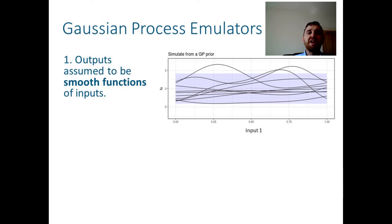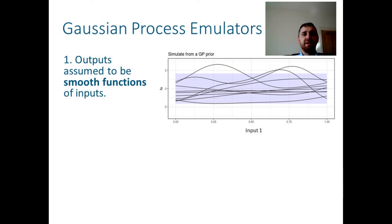So this describes the sort of input-output relationships we believe might be possible before we've actually run our simulation. Then, once the metamodel has been updated with the training data, we can obtain a posterior distribution that describes our predictions for the simulation output for any combination of input values, based on what we have learnt about the simulation from the training data. We also obtain a measure of how uncertain we are about the value of the simulation at input values that we have yet to observe.